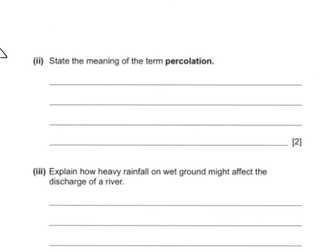Another type of question you might get is a simple definition question: state the meaning of the term percolation. We've talked about that quite a bit already. The answer is that this is the movement of water from the soil layer into the rock layer — two marks.